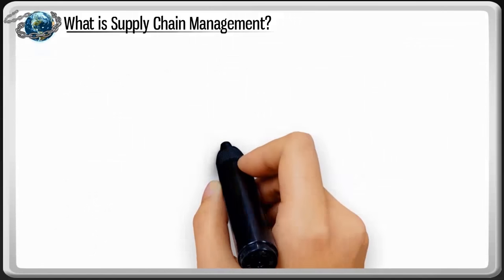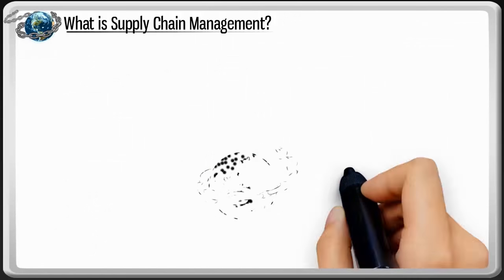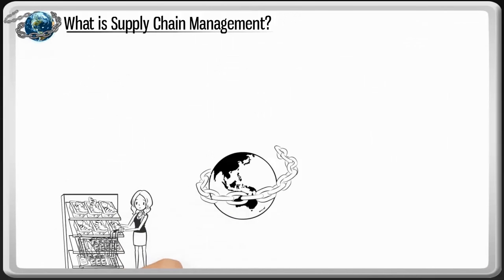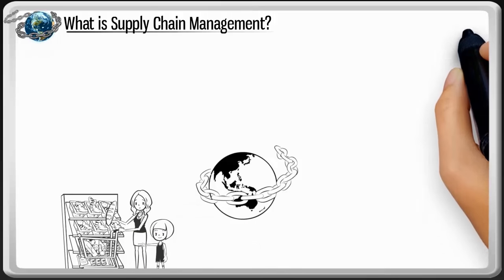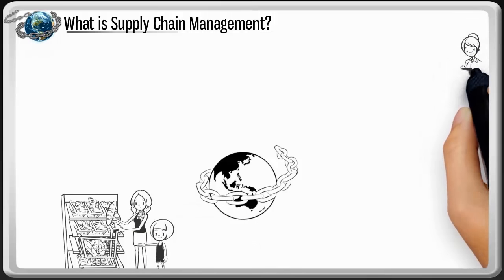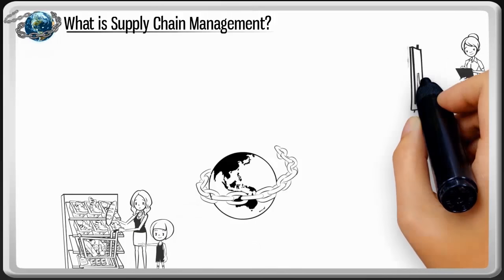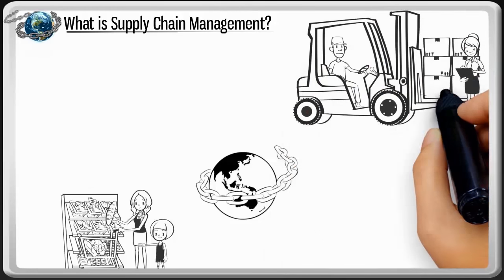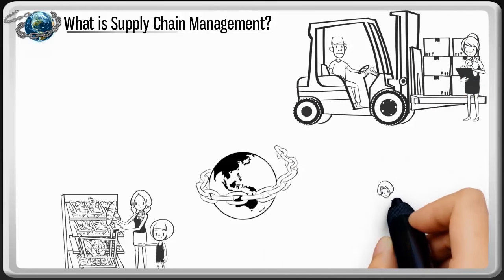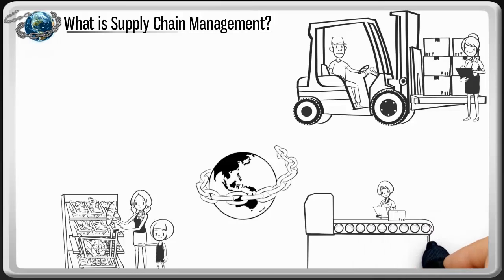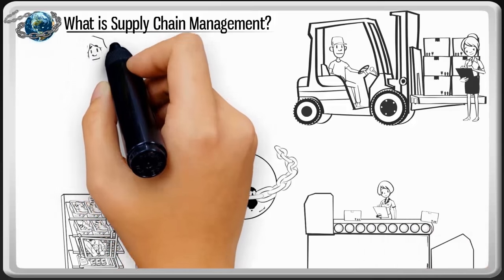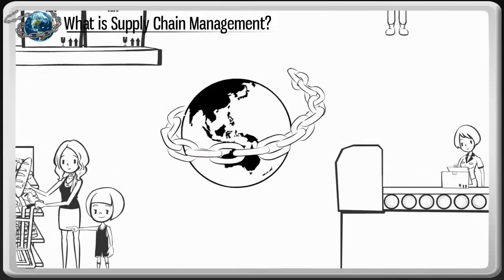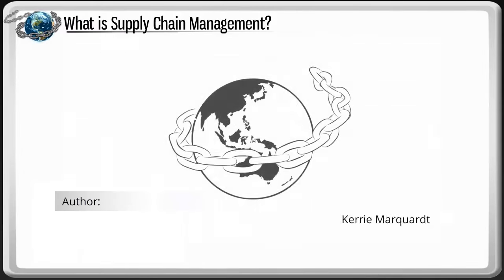As you can see from our example, the supply chain is all around you and is part of your everyday life. As a supply chain professional, you get to work with many people from different areas of the business to solve problems, analyze data, improve processes, and build strong relationships that support the chain of supply. You have finished: What is Supply Chain Management?